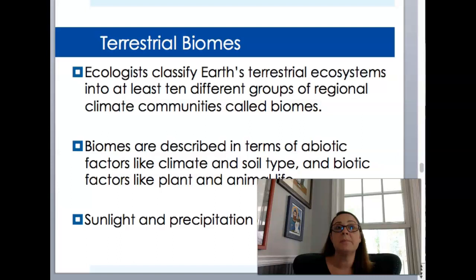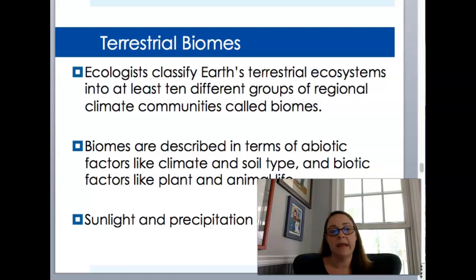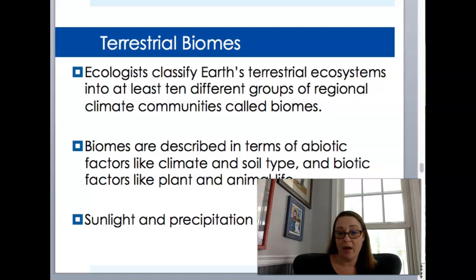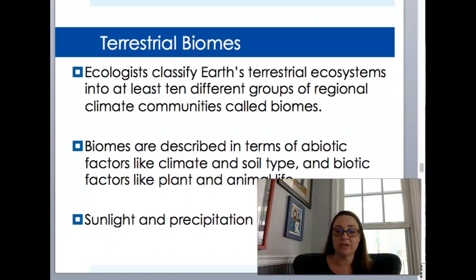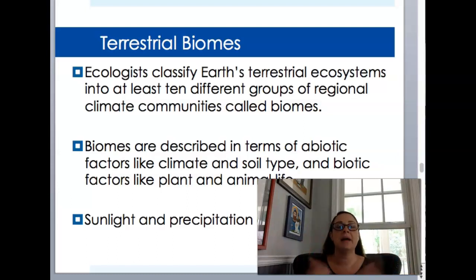We finished up 4.1, 4.2, and 4.3 talking about weather and climate and how that's going to impact ecosystems. We talked about how different interactions are going to impact how organisms live together and where they can live. Now we're going to talk about the places they live — the actual areas. All of these factors come together and define these areas. The first group we're going to look at are terrestrial biomes.